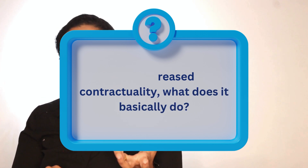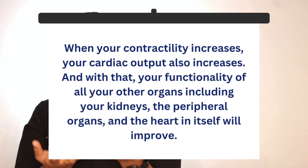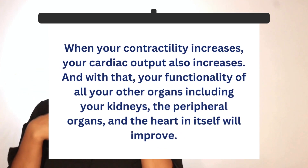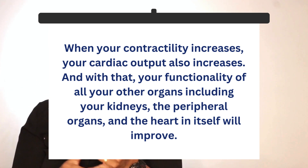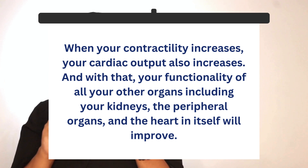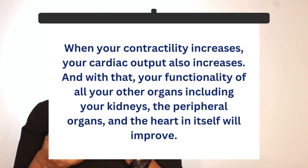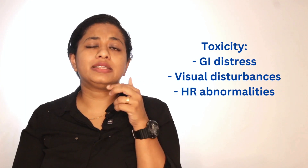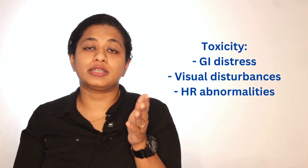With increased contractility, cardiac output also increases, and with that the functionality of all other organs — including the kidneys, peripheral organs, and the heart itself — will improve. With digitalis, the easiest way to remember toxicity is that the signs and symptoms are associated with GI, visual, and heart effects.